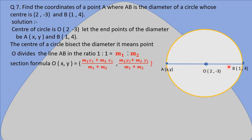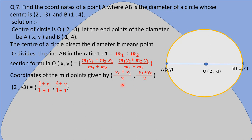The center divides the diameter in the ratio M1 : M2 = 1 : 1. Applying the section formula with M1 = M2 = 1 gives us the midpoint formula: x = (x1 + x2) / 2 and y = (y1 + y2) / 2. We use this midpoint formula to find the unknown endpoint A.